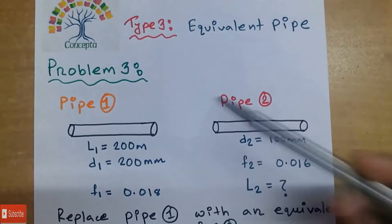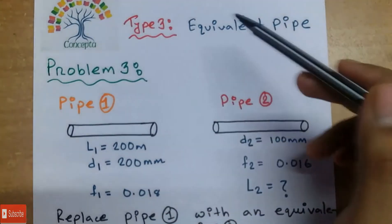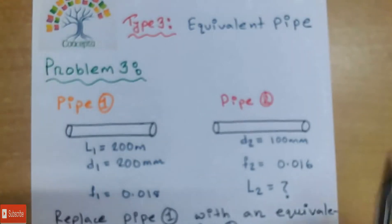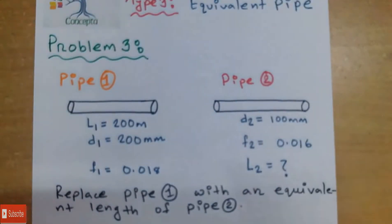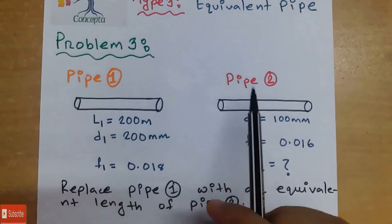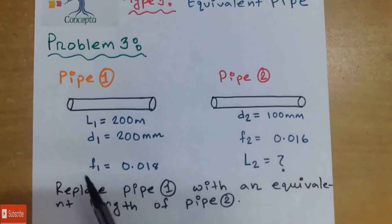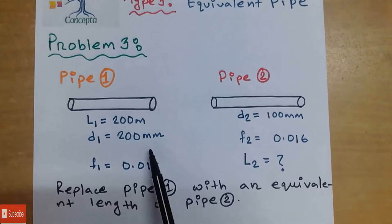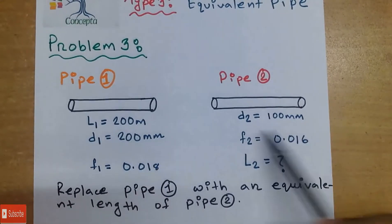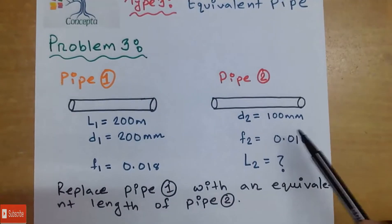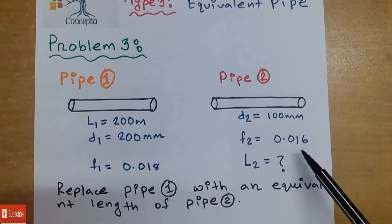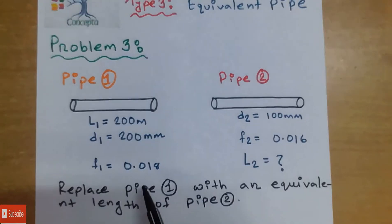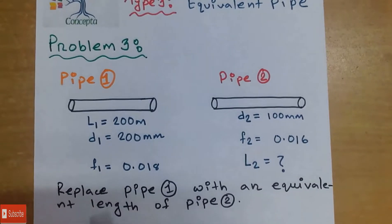This is a Type 3 problem. The pipe tube has a length of 200 meters. The diameter D1 is 10 cm and D2 is 100 mm. The friction factor f1 is 0.016 and f2 is 0.018. This data corresponds to pipe L2.